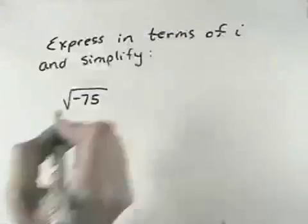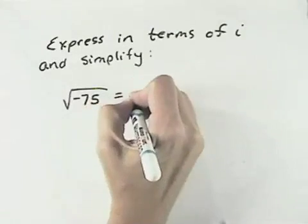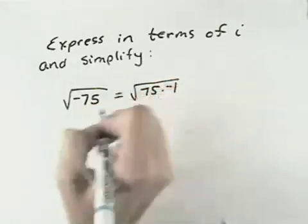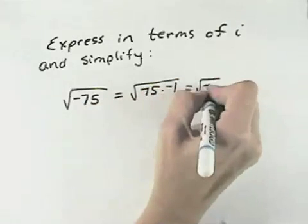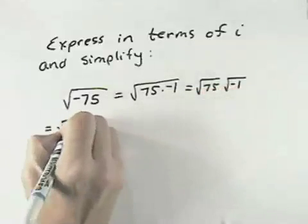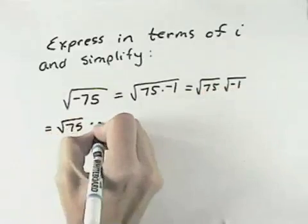So in this case, we have the square root of negative 75. We can begin by writing that as the square root of 75 times negative 1. And that's the square root of 75 times the square root of negative 1. So we have the square root of 75 times i.